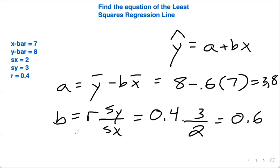Put that all together, and the equation for our least squares regression line is going to be y-hat equals 3.8 plus 0.6x. And that's how you find the equation of the least squares regression line.